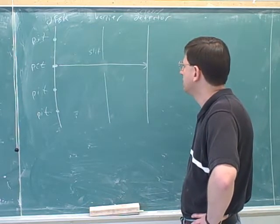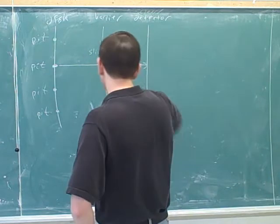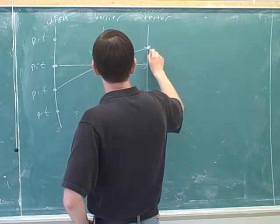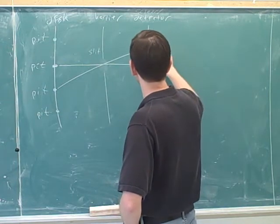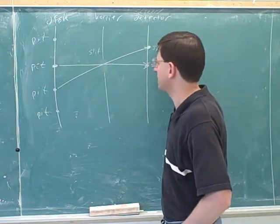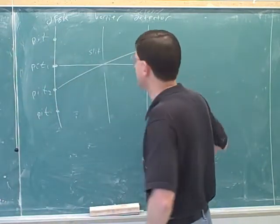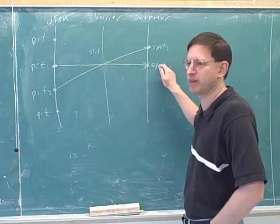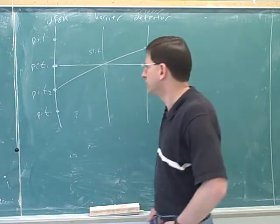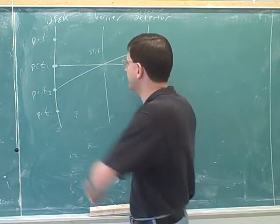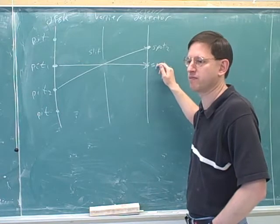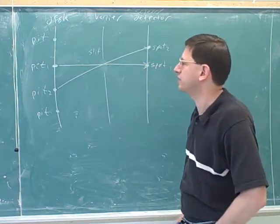Now, the light that bounces off this pit might form a spot over here on the detector. The detector would say, 'this is the information from pit 2, and this is the information from pit 1.' This is the way the world would work if light was made out of particles — the screen would know for sure that this light is coming from pit 1 and that this light is coming from pit 2.